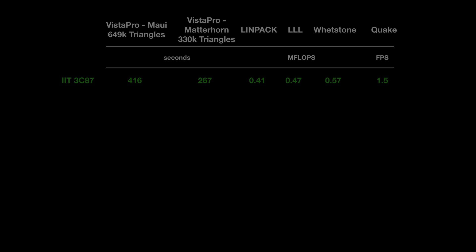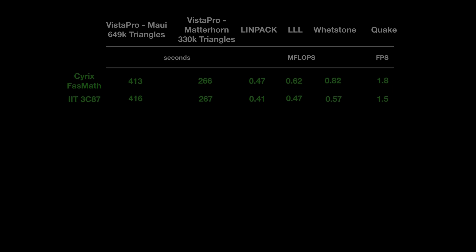Then I tested the Cyrix FastMath chip. This one was slightly faster: 430 seconds for Maui and 266 seconds for Matterhorn. In Linkpack it did better at 0.47, LLL was a lot better at 0.62, and surprisingly Whetstone scored 0.82 megaflops. And even in Quake it did better at 1.8 frames per second. So that meant Cyrix is our fastest chip at this point.